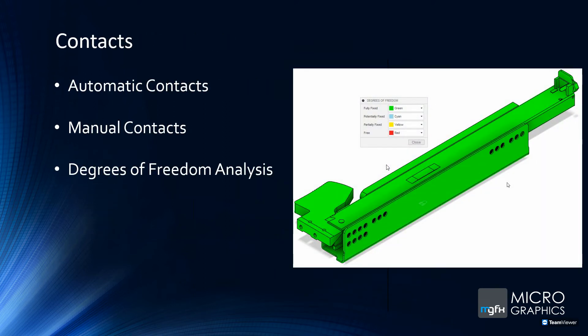Normally, when you enter the simulation environment, you run automatic contacts on the assembly and it places everything in. You can then go into the contacts manager and change them, or add manual contacts if something wasn't captured in the automatic contact process. One of the nice tools Fusion 360 has is a degrees of freedom analysis, which tells you whether parts are fully fixed, potentially fixed, partially fixed, or free.